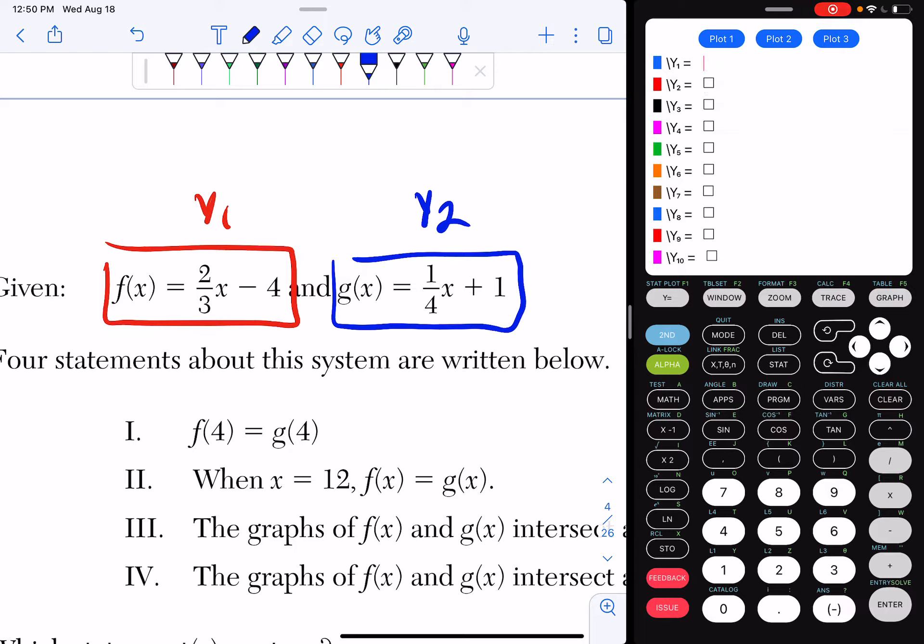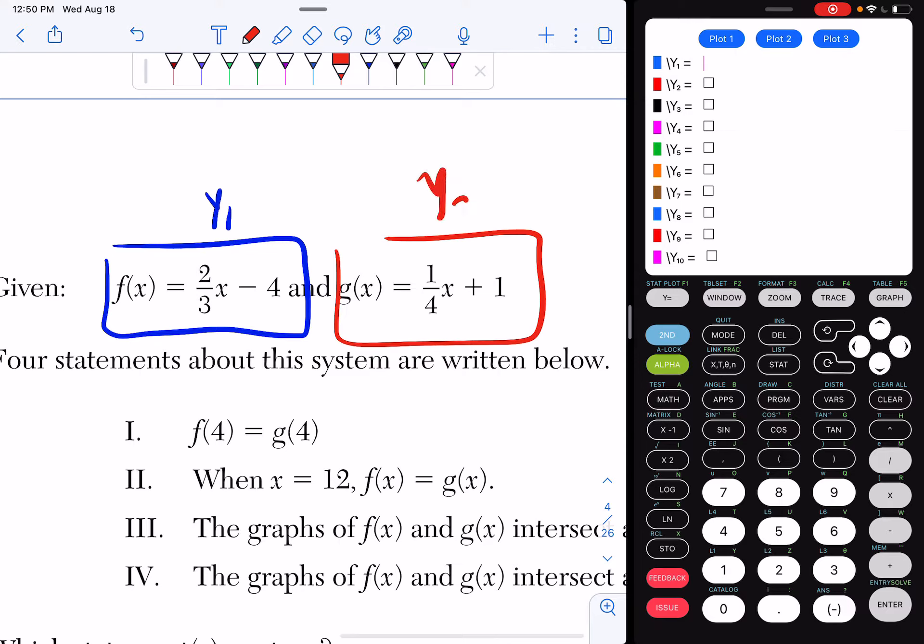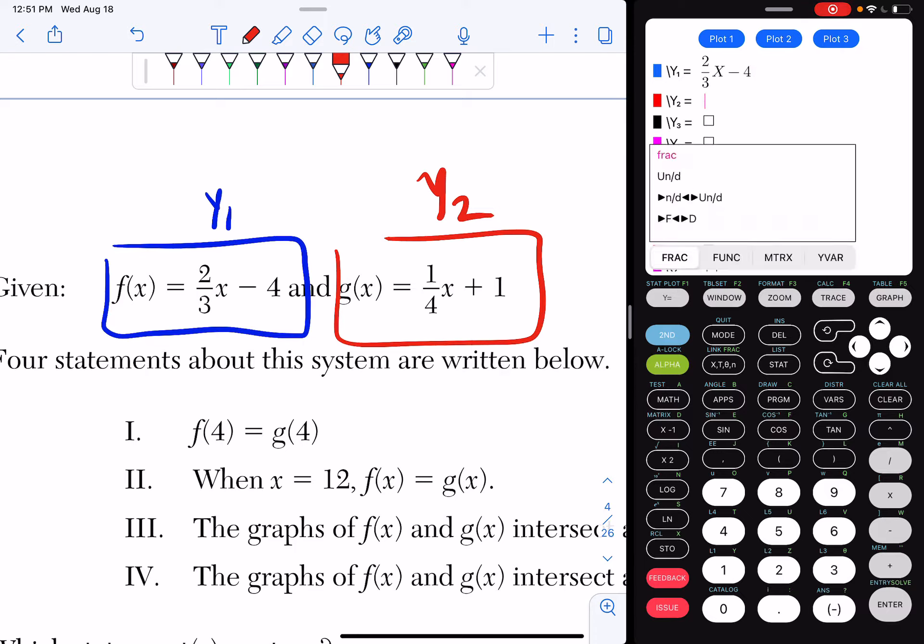Actually, this is blue, this is red, so I'm going to erase. So in y1, I'm going to put my alpha y equal enter 2 thirds x minus 4. And then I'm going to do my alpha y equal enter my 1 fourth x plus 1.